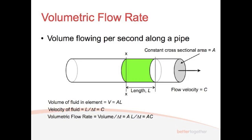The volumetric flow rate is going to be the volume divided by the time. That comes out to be AL — which is our volume — divided by delta T. And we have L divided by delta T, which equals velocity. So you can say the volumetric flow rate is A, the area, multiplied by C, which is the flow velocity. We denote that using the symbol V dot.